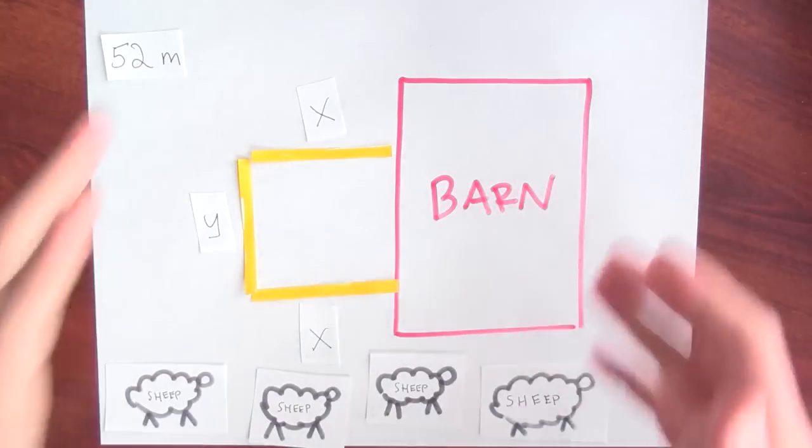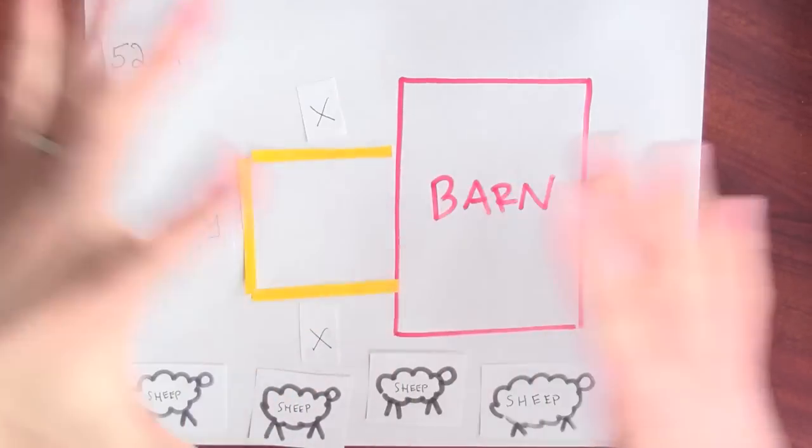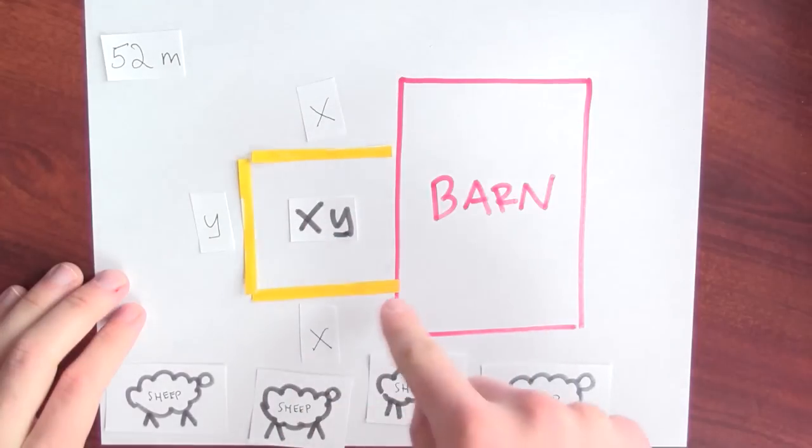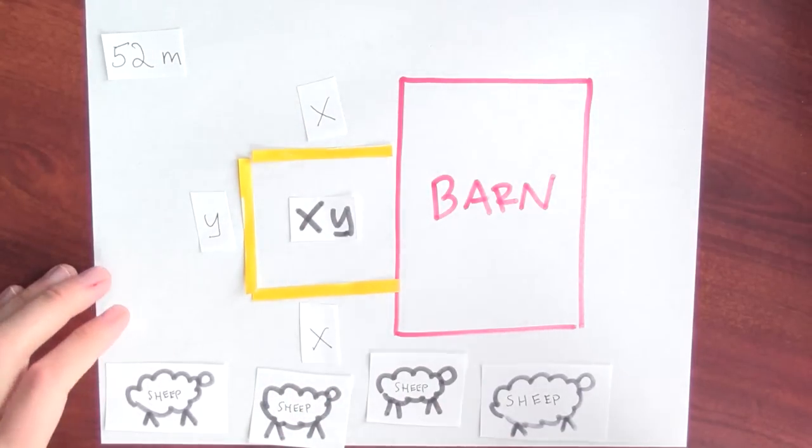Now, what is it that I'm trying to maximize? Well, I want the fenced in area here to be as big as possible. So the thing I'm trying to maximize is the area of this pen. And that area is x times y.